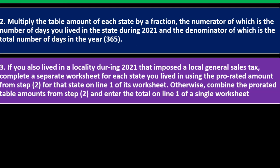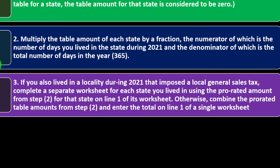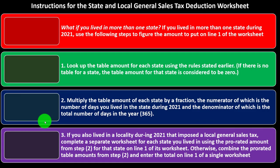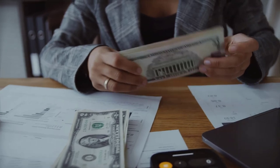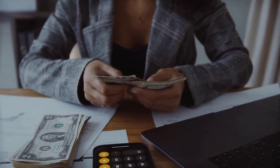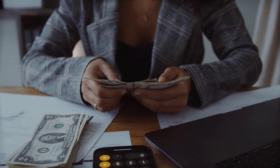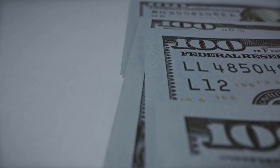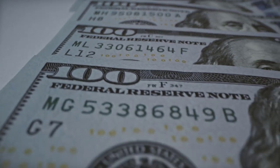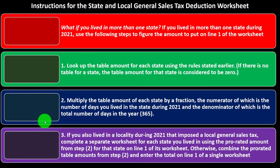Tax software is helpful to do this kind of allocation. Otherwise, combine the prorated table amounts and enter the total on Line 1 of a single worksheet. These calculations can get somewhat in-depth. Whatever we do with these calculations — whenever we pull from tables — it's a good idea to have a general understanding of how things work. What is the progressive tax system? What's the general state sales tax deduction versus the income tax? When might we take the actual deduction versus letting the tables do the calculation? Then, rely generally on the software to help you out once you've got the general strategy in place.